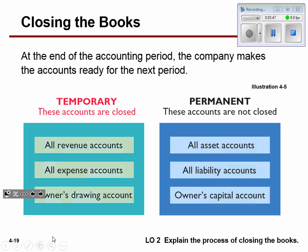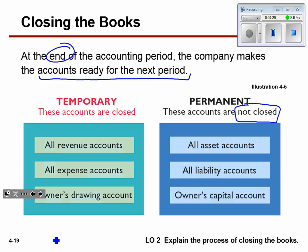Closing the books happens at the end of the accounting period when the company is basically getting ready for the next fiscal period. They're getting all the accounts ready for the next fiscal period. The important piece here is that for the first time you're learning that some accounts are considered temporary and other accounts are considered permanent. As far as the permanent accounts, they are the ones not closed. Whereas temporary accounts are closed — meaning zeroed out.